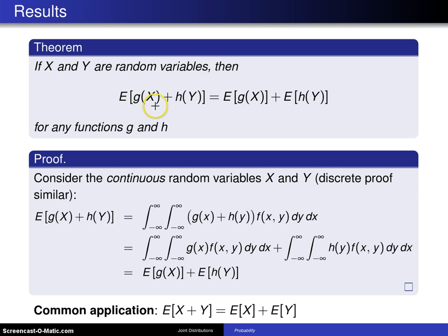Then the expected value of g of X plus h of Y is the expected value of g of X plus the expected value of h of Y for any functions g and h. Now, in this case, you're always assuming when the expectations exist.